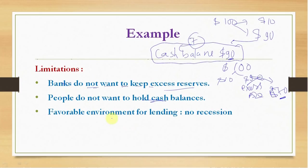The third limitation is that there should be a favorable environment for bank lending — meaning there should be no recession. If there is a recession, individuals will not take any loans from the banking system and the credit creation process will shrink or can even stop.